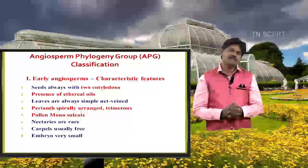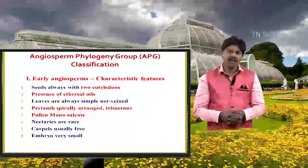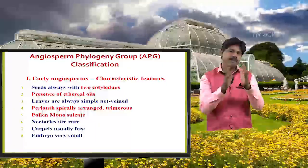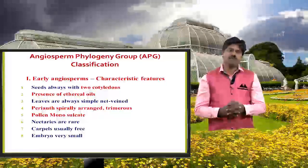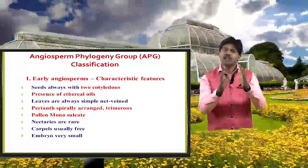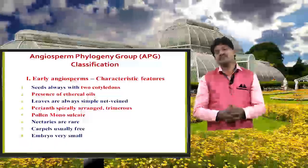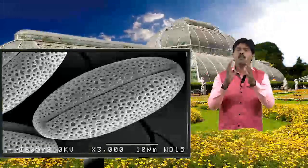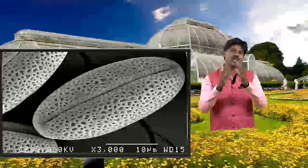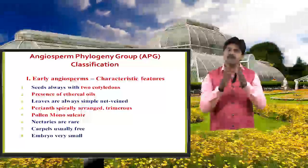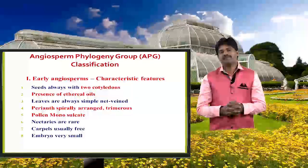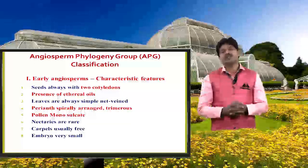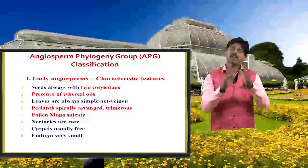The characteristic features of early angiosperms include two cotyledons, monosulcate pollen grains, and the presence of ethereal oils. The perianth, which is normally a character of monocots, is also a character of early angiosperms and is trimerous. Early angiosperms have characters of both dicots and monocots. Nectaries are very rare, and the embryo is very small compared to monocots.